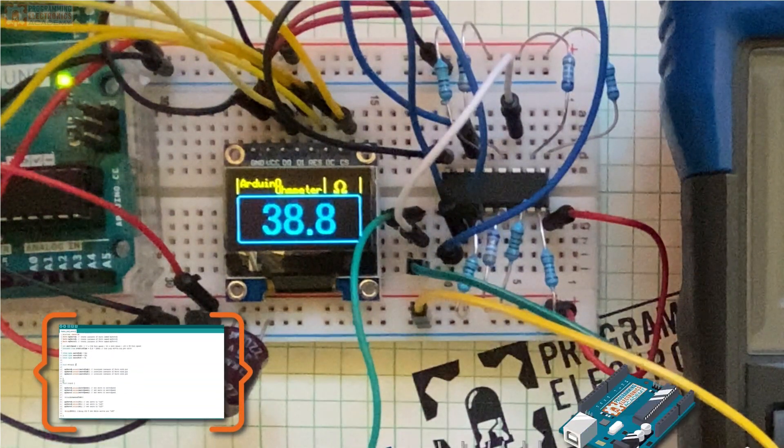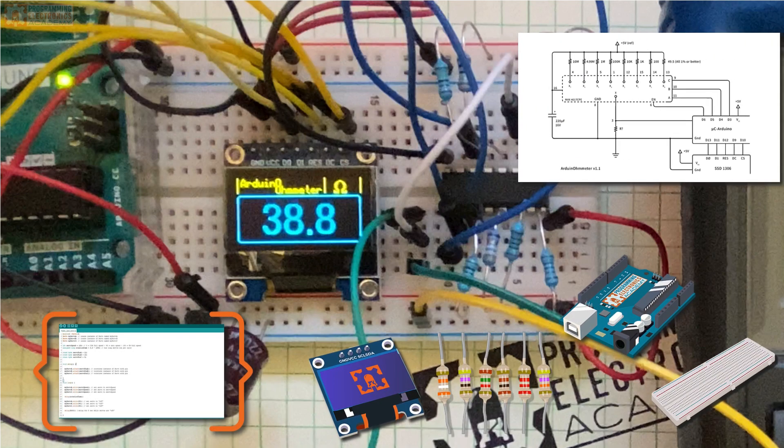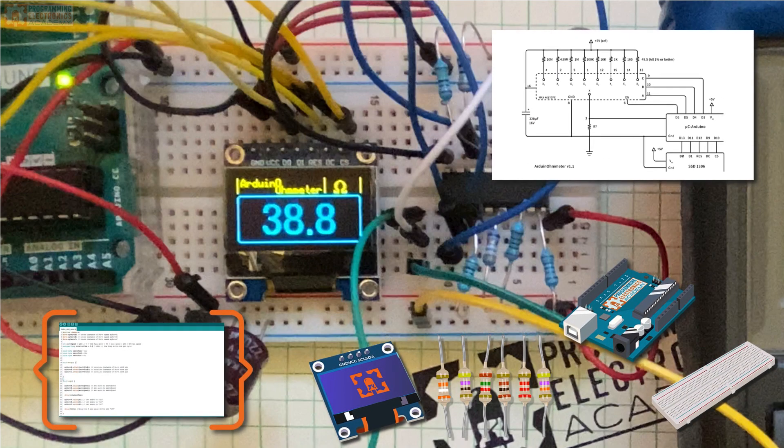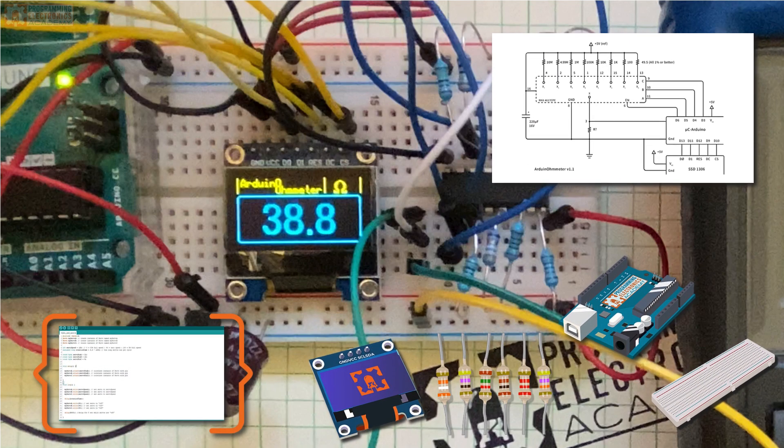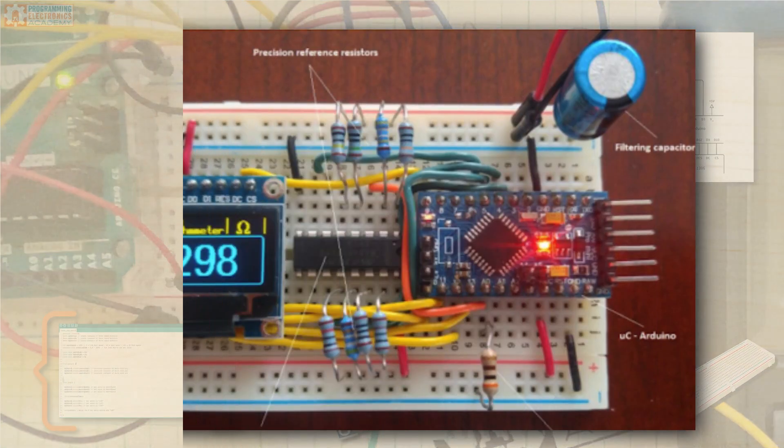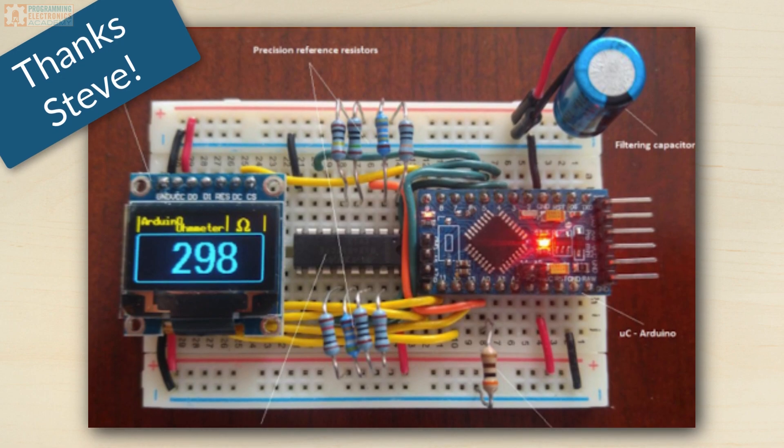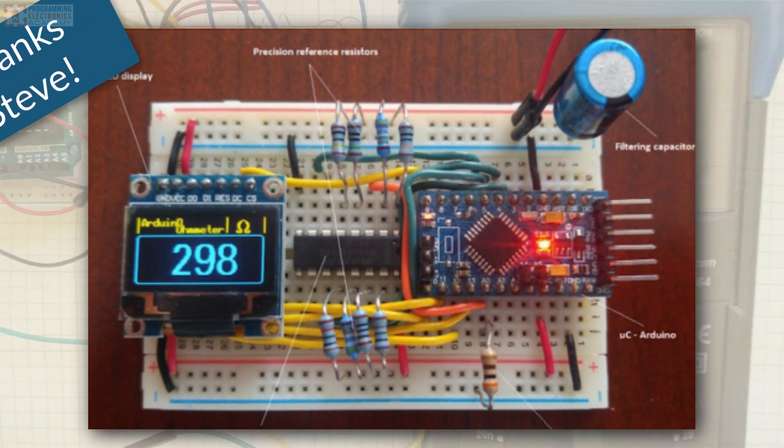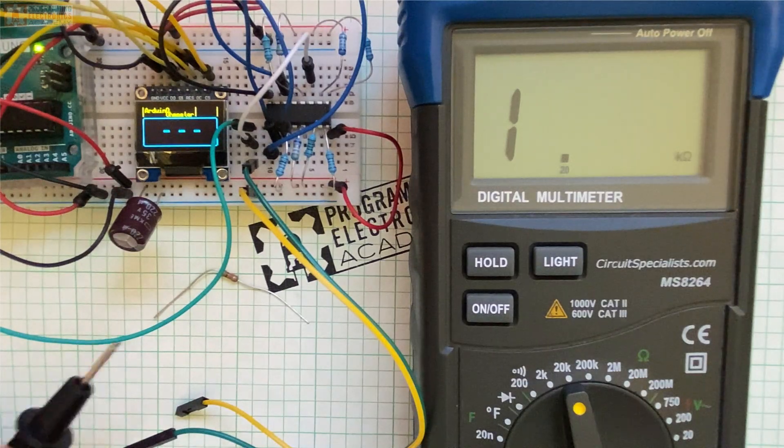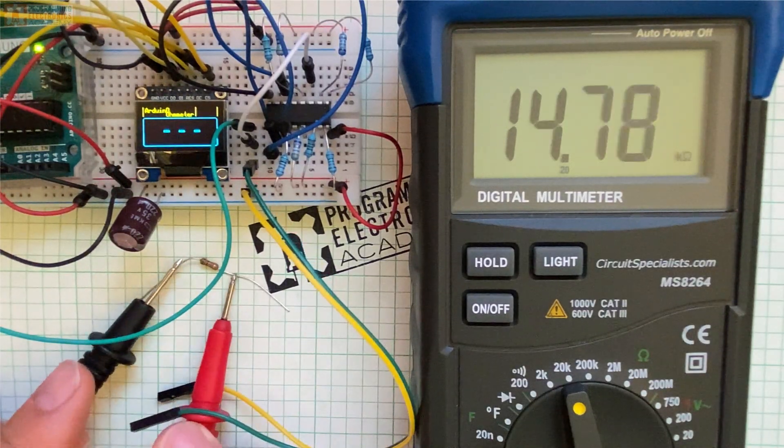We have provided all the code, a parts list, and a schematic diagram that we've linked to in the description so you can easily build this on your own as well. We have our own Steve Stefanitis to thank for building this project. He is one of Programming Electronics Academy's technical writers. Check out this project build and watch me test it against an off-the-shelf multimeter I picked up from Amazon.